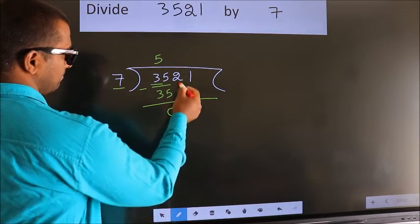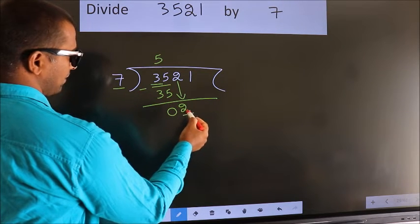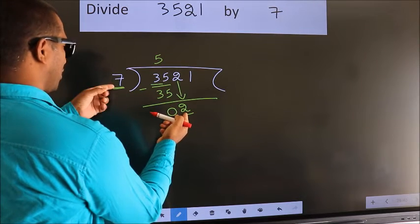After this, bring down the beside number. So, 2 down. Here we have 2, here 7. 2 smaller than 7.